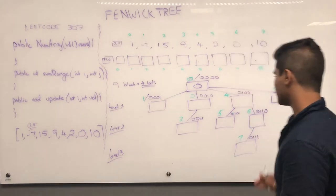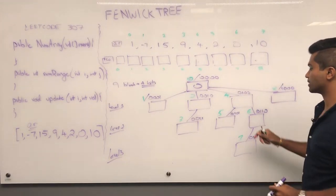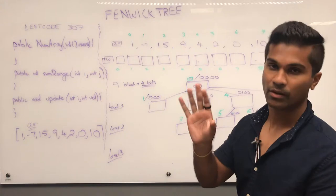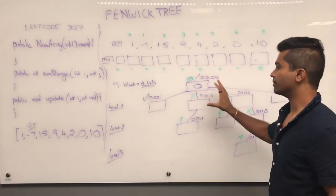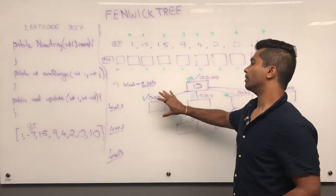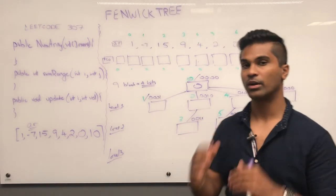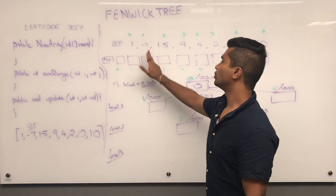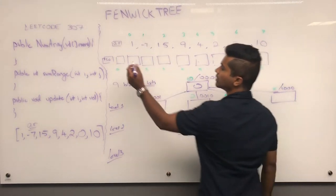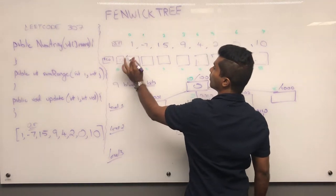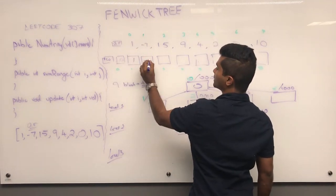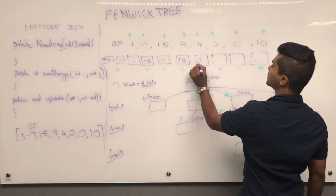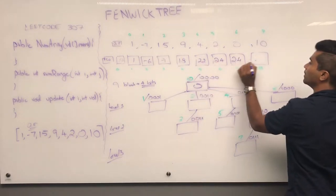That's why the parent of 7 is 6 and the parent of 6 is 4 — we go from a number to its parent by taking away the rightmost set bit. Now let's begin building our tree. We need to cumulatively sum everything and put it in the Fenwick Tree. So: 0, 0+1=1, 1+(-7)=-6, -6+15=9, 9+9=18, 18+4=22, 22+2=24. And the last value gives 34.